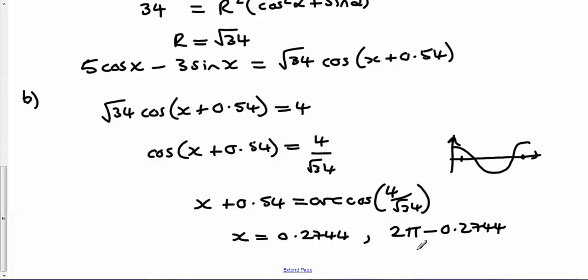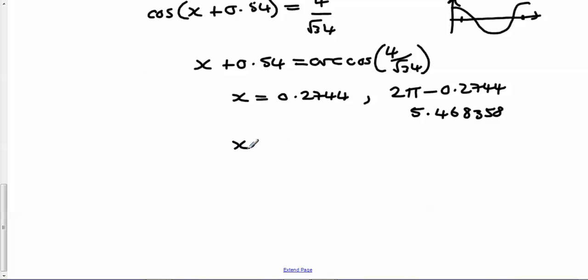And that gives us 5.468, and to two decimal places we end up with 0.27 and 5.47.